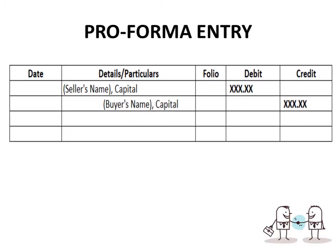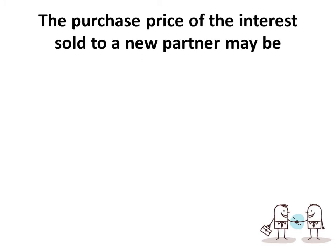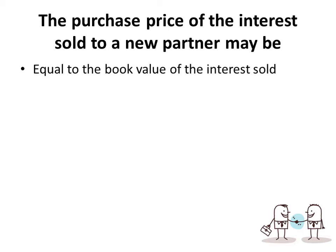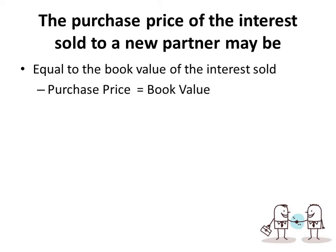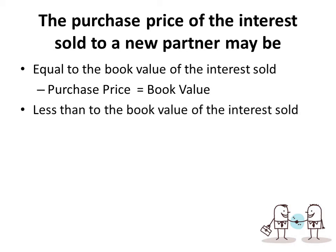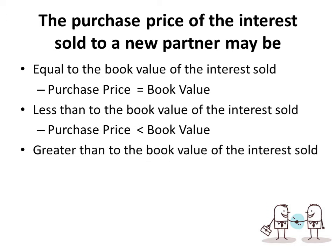For the journal entry when purchasing an interest, we debit the seller's capital account to eliminate that partner's interest and credit the buyer's capital so it is added to the capital account. There are three methods: the new partner's purchase price may be equal to the book value of the interest sold — no accounting problem here. It could also be less than the book value, meaning the buyer paid less. Or it could be greater than the book value of the interest sold.